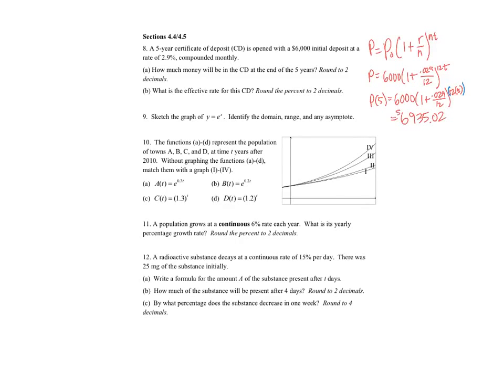So that's part A. Part B says what is the effective rate, and so what the meaning of that is, is it says that it's 2.9% compounded monthly. So the question is what is the actual yearly rate? So it should be something close to 2.9% but slightly larger.